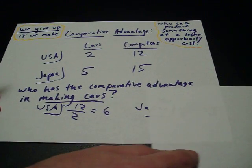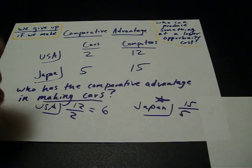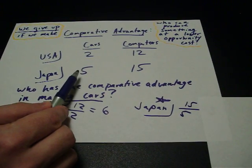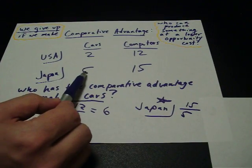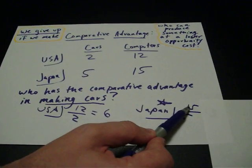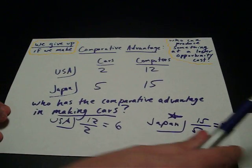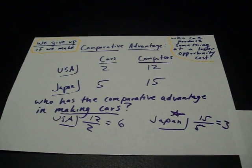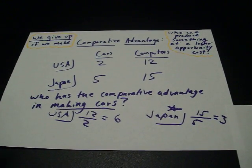For Japan, we give up over if we make. They were asked about the production of cars. Japan can produce 5 cars or 15 computers. If they make cars, they can make 5, and they give up the opportunity to make 15 computers. 15 over 5 reduces to 3, meaning for every car they produce, they give up the production of 3 computers.